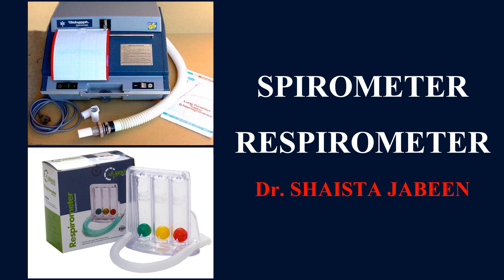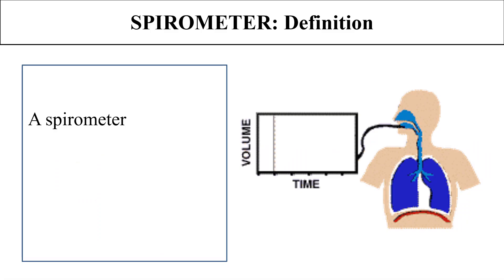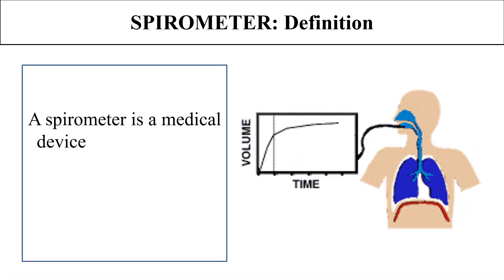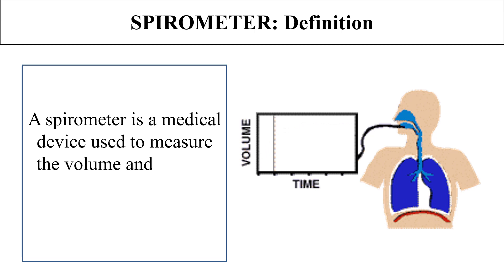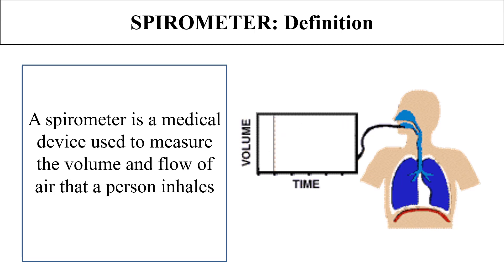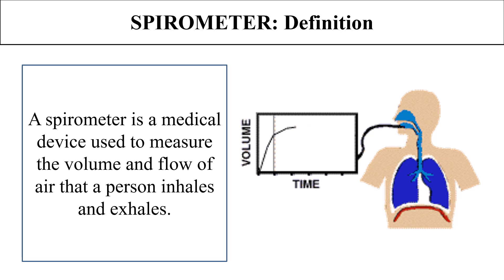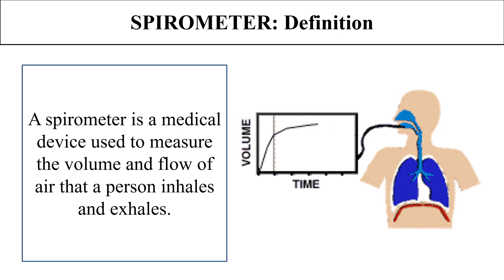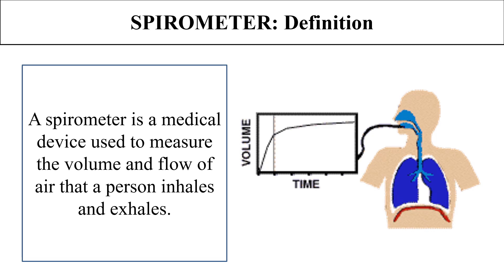Let's start with the significance. What is a spirometer? A spirometer is a device that measures the lung volumes and capacities of a specific person when they inhale and exhale air. The spirometer machine measures the volume and capacities of the lungs of that person.